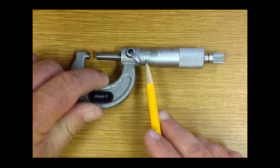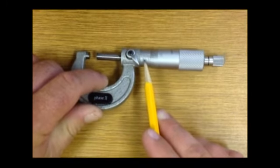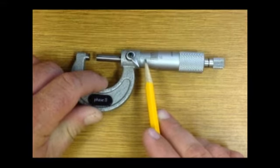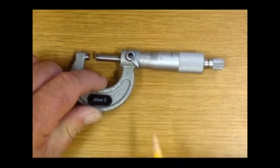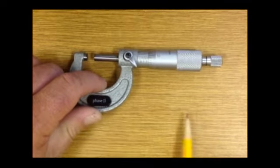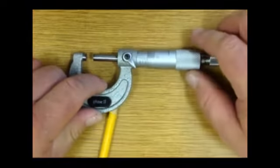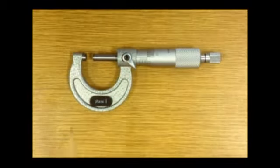Each line inside, zero, one, two. Each mark inside of zero to one, one to two is 25,000. That was our full revolution we did at the very beginning. So let's measure this pencil and see what we get.